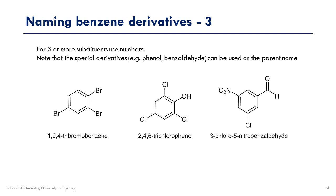Here there's a clear priority group — the phenol — so we need to start on number 1 there. Going in either direction, this will be called 2,4,6-trichlorophenol.